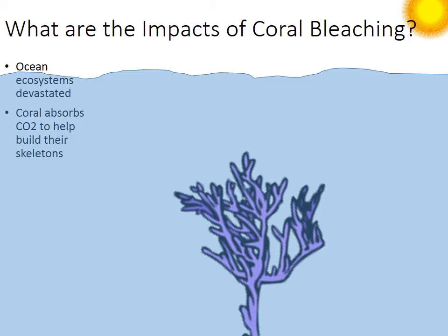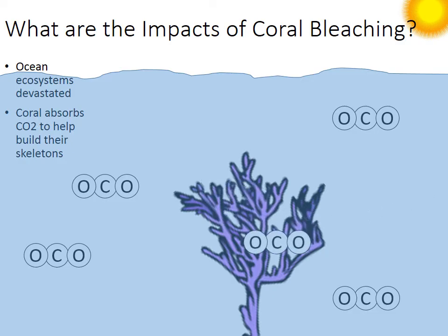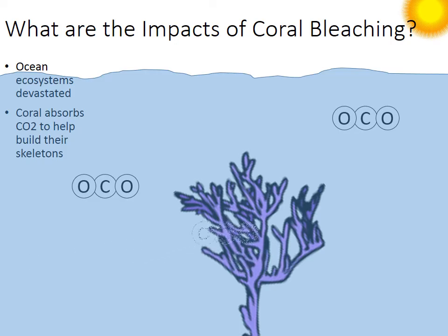Corals also absorb carbon dioxide — they contain photosynthetic algae, and when they take in carbon dioxide, they use it to help build their skeletons. Carbon dioxide is being absorbed because of the algae that do photosynthesis. So the protection of corals is one way to combat and fight climate change, and yet our actions are leading to their destruction — another way to connect corals to climate change.